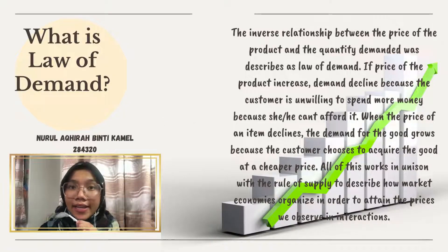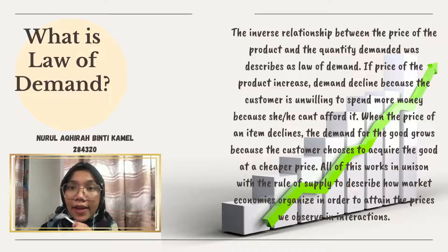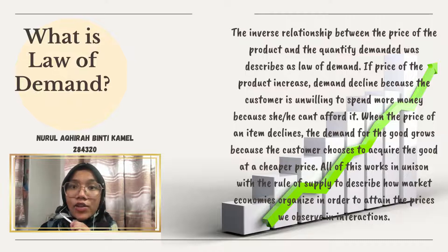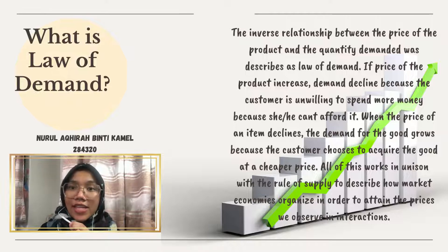The law of demand describes the inverse relationship between the price of a product and the quantity demanded. If the price of a product increases, demand declines because the customer is unwilling or unable to spend more money. When the price declines, demand for the good grows because the customer chooses to acquire the good at a cheaper price. All of this works in unison with the rule of supply to describe how a market economy is organized in order to attain the prices we observe in interactions.